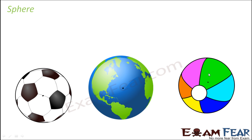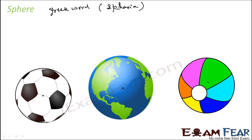The word sphere came from a Greek word, 'Sphaira', meaning globe or ball. The best examples of a sphere are a cricket ball or football, and even the Earth is also spherical.